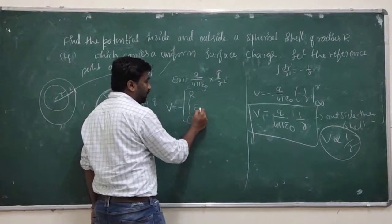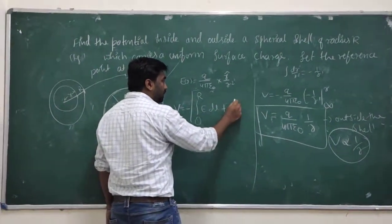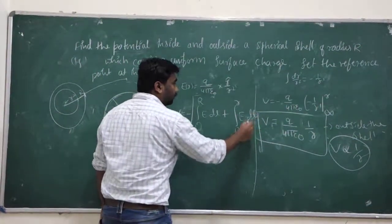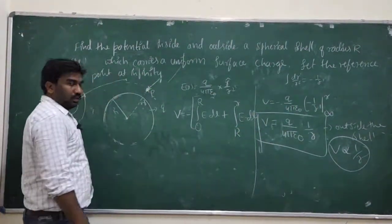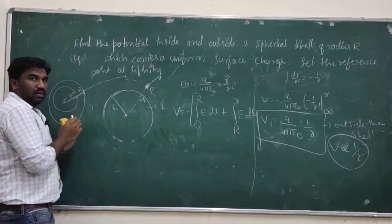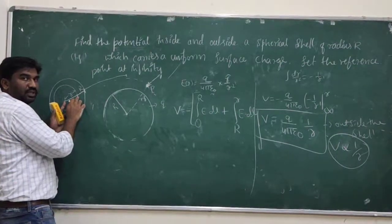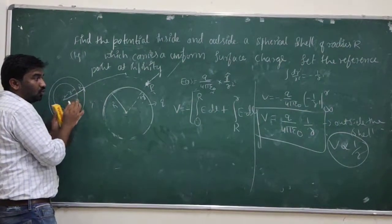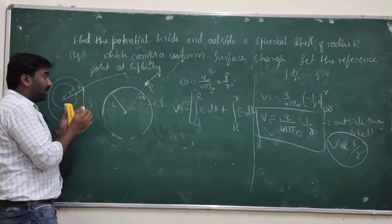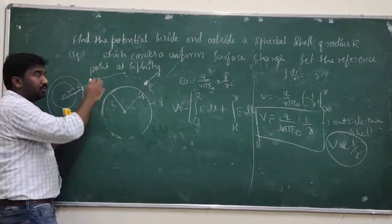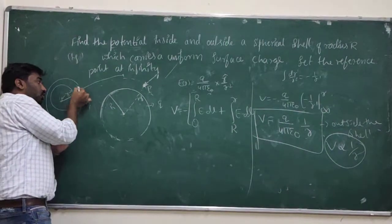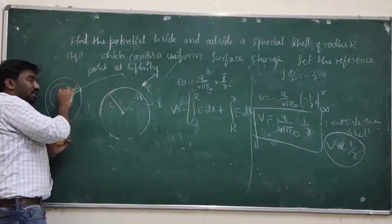So: reference point to R of E dot dl, plus R to r of E dot dl. The potential for this spherical shell inside at a distance r: we assume we are bringing the charge from infinity to the given point R (the shell surface), and then from R to r, the small interior distance.